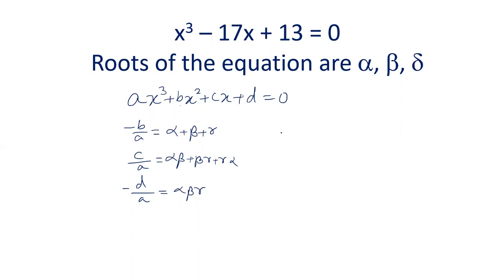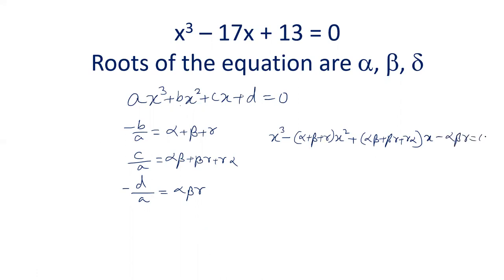In general, the cubic equation in terms of its roots will be: x³ - (alpha + beta + gamma)x² + (alpha·beta + beta·gamma + gamma·alpha)x - alpha·beta·gamma = 0. This is the general form of the cubic equation and the relation of the roots with the coefficients.